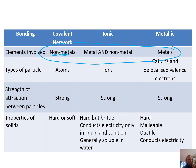The only one that could get confused with is covalent network, because they're also non-metals, but they'll have much higher melting points because the bonds are much stronger. Covalent network is held together by covalent bonds, ionic by ionic bonds, and metallic by metallic bonds. They kind of come from their names.